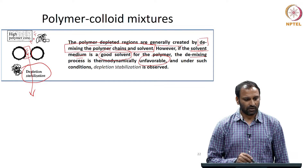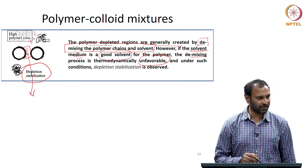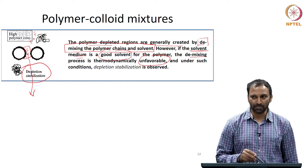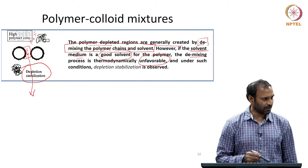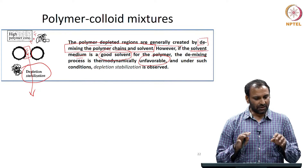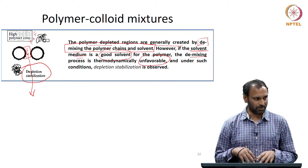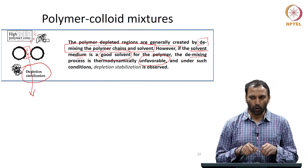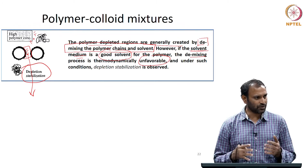That means it will be very difficult, practically impossible, to move the polymer out of the gap. The region between the particles will continue to have polymer. Because demixing is what should happen for the particles to come sufficiently close.